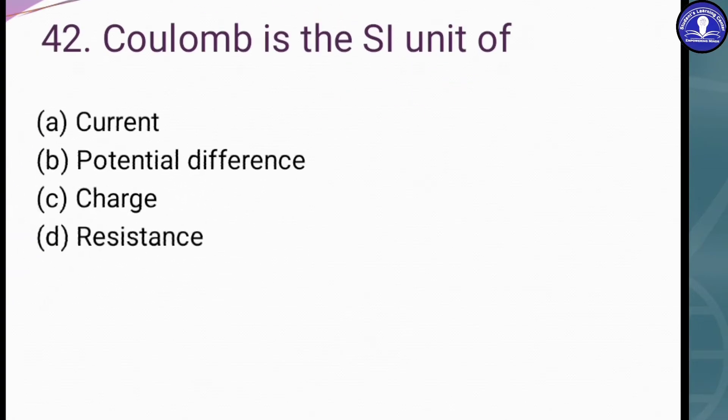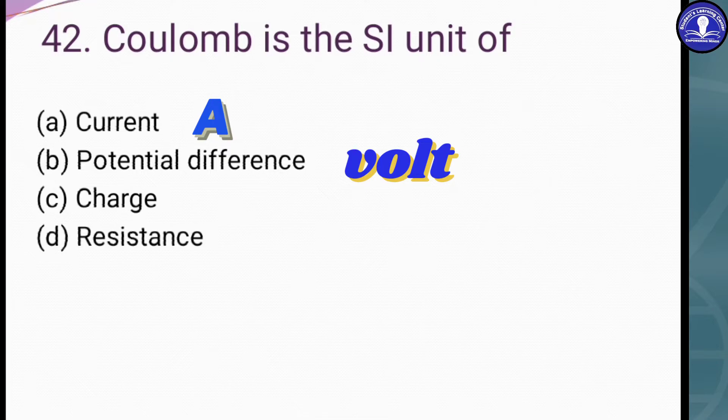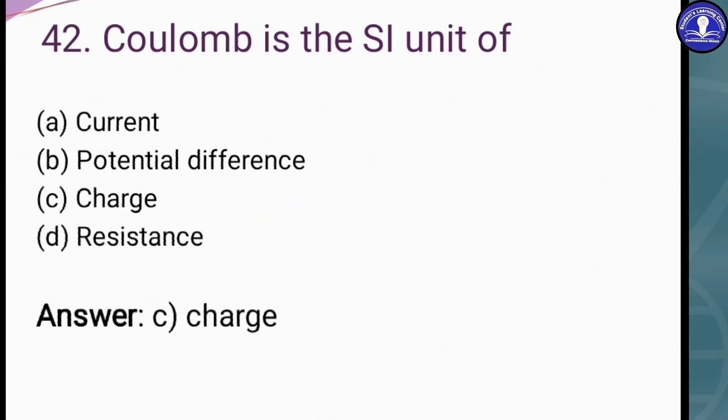Next question: Coulomb is the SI unit of - option A current, option B potential difference, option C charge, option D resistance. The SI unit of current is Ampere, denoted by capital letter A. The SI unit of potential difference is volt. Note that potential difference and voltage are one and the same, used simultaneously in different contexts. The SI unit of charge is coulomb, and the SI unit of resistance is ohm. So the answer is option C - charge.